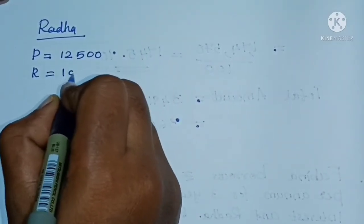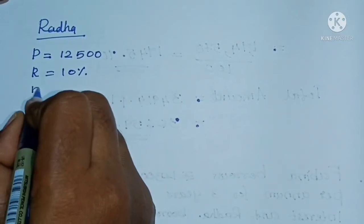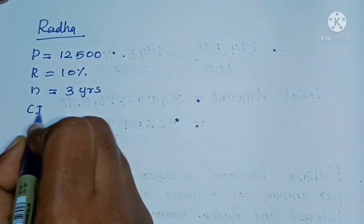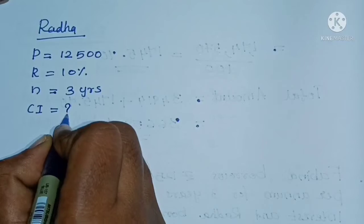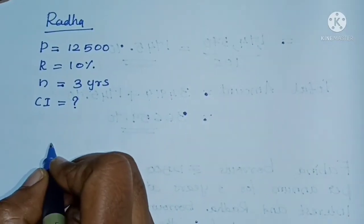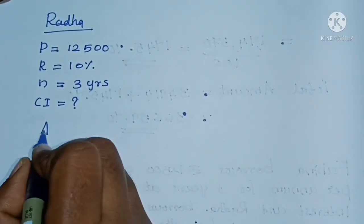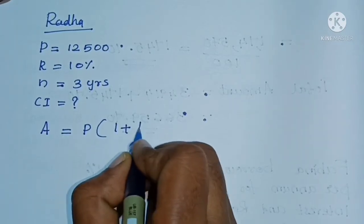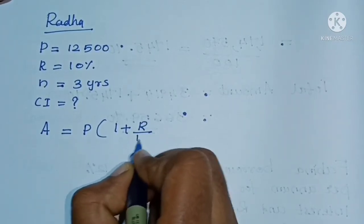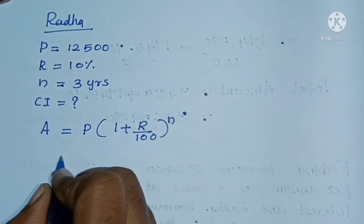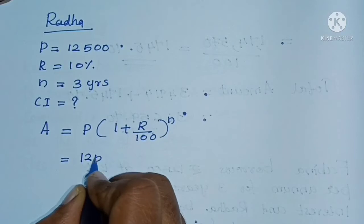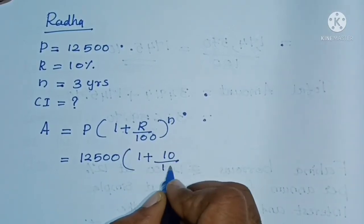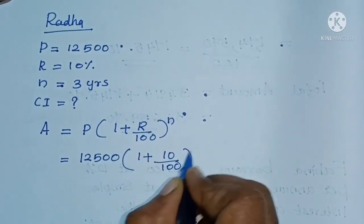Now for the compound interest: the principal P is 12,500, rate is 10%, and n is 3 years. The total amount A equals P into (1 plus R by 100) whole raised to n, which is 12,500 into (1 plus 10 by 100) whole raised to 3.